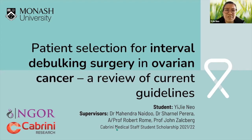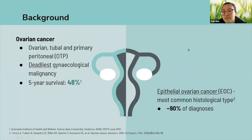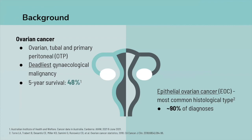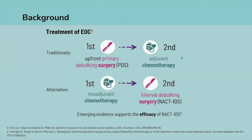Our next speaker Yiji is going to talk about patient selection for primary debulking versus interval debulking surgery — a review of current guidelines for epithelial ovarian cancer. Thank you for the opportunity to present. Ovarian cancer often refers to ovarian, tubal, and primary peritoneal cancer, and it's the deadliest gynecological malignancy with a five-year survival of only 48 percent in Australia. The most common histological subtype is epithelial ovarian cancer, or EOC, accounting for more than 90 percent of diagnoses.